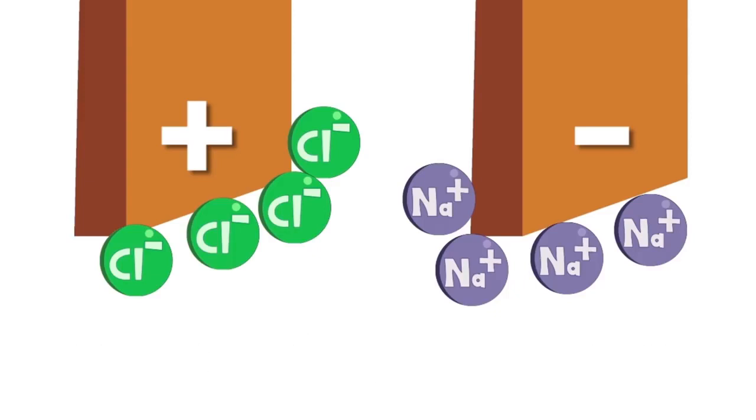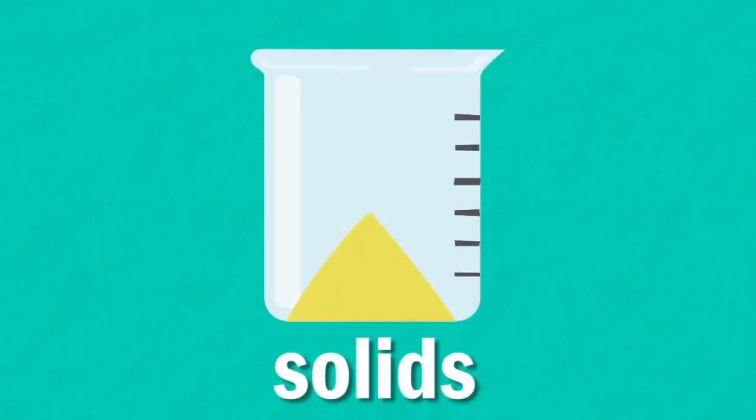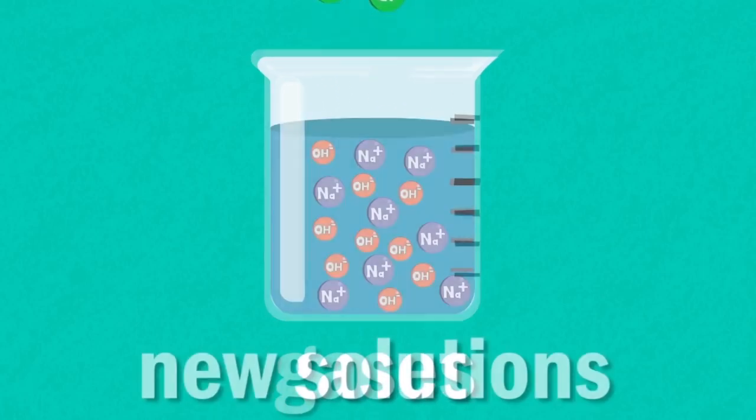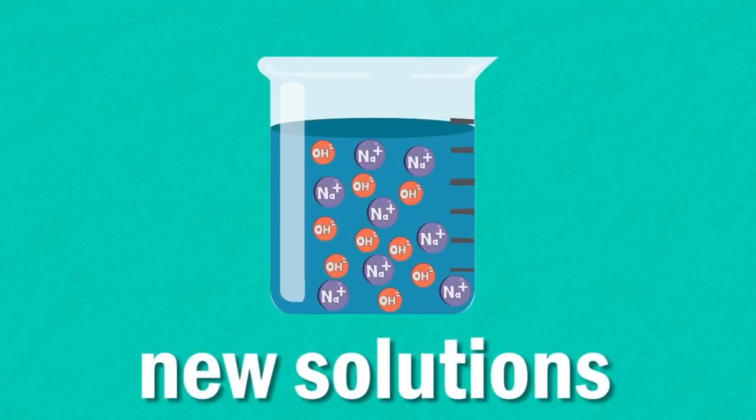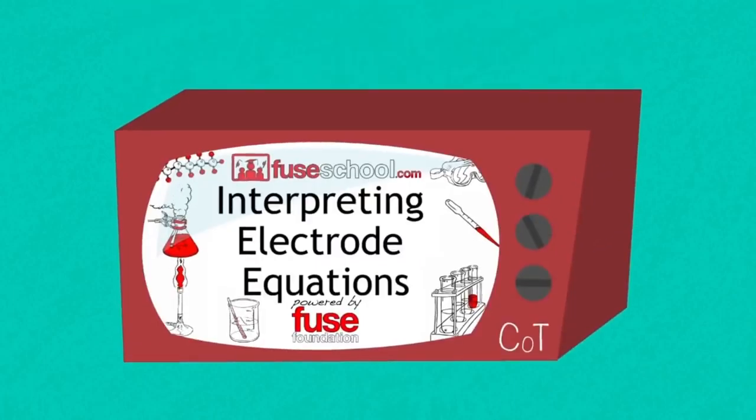When the ions meet the electrodes, electron exchange happens and this triggers a chemical reaction. Solids can form, gases can be given off and new solutions can be left behind. It all depends on the liquid and what material the electrodes are made from. There is more detail about this process in our lesson interpreting electrode equations.